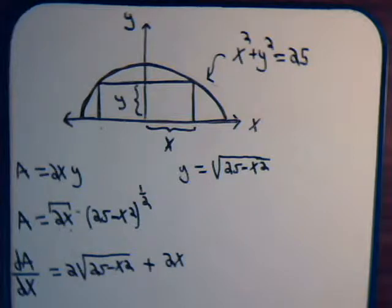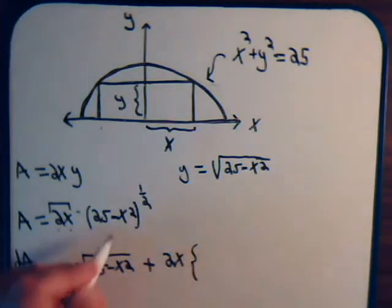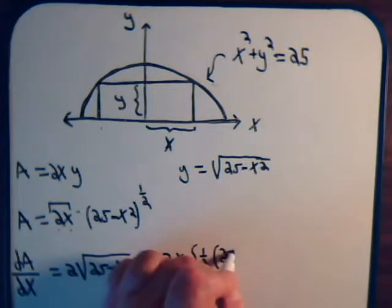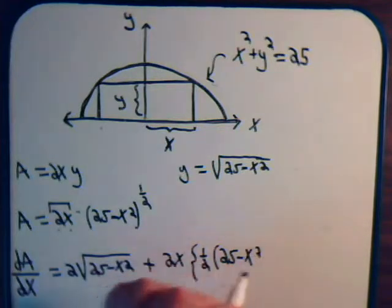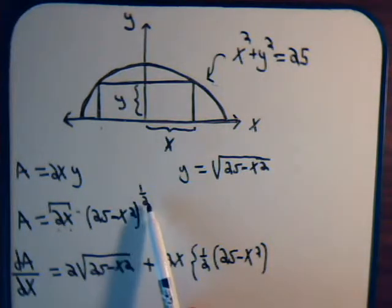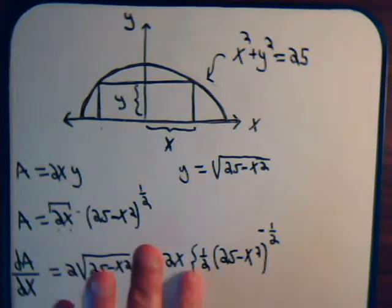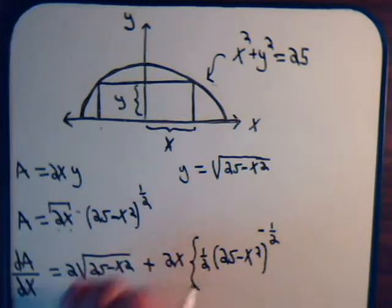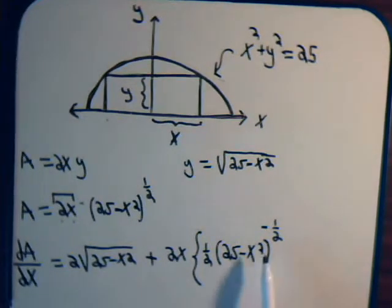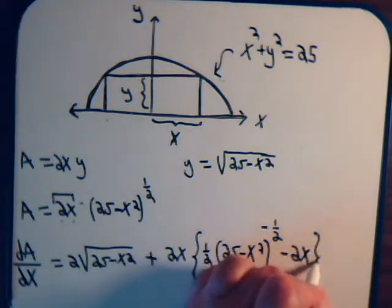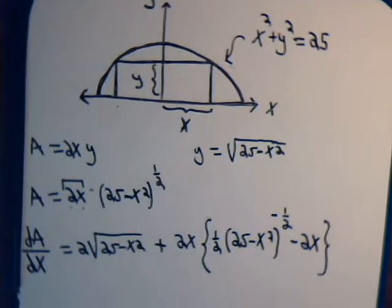Now we take the derivative: we have 1/2, bringing this down, times 25 minus x squared to the power of 1/2 minus 1, so that's minus 1/2. And then we take the derivative of what's inside the parentheses, and that will be minus 2x. So that's our expression for the derivative of the area with respect to the variable x.